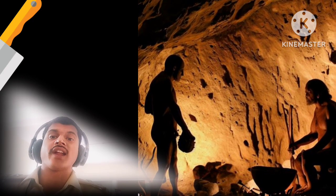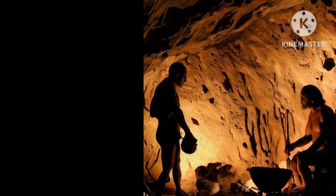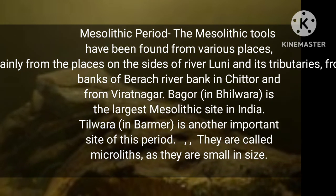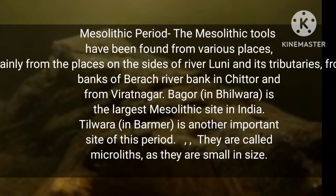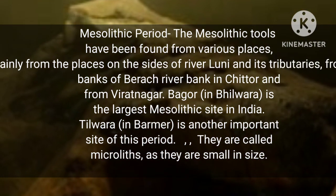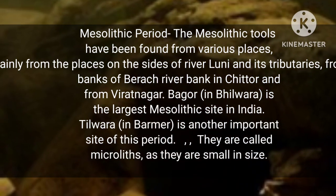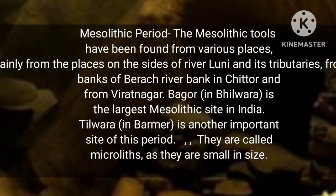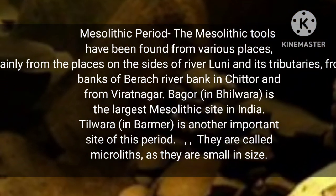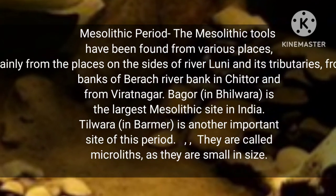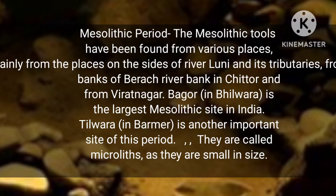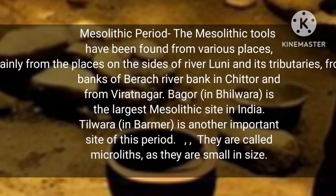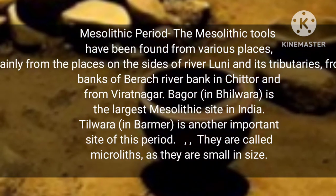In 1870, a Paleolithic hand axe was discovered from Jaipur. Mesolithic tools have been found in various places, mainly on the sides of rural areas and the east tributary banks of the Beras river in Chittorgarh and Virat Nagar. Bagor in Rajasthan is the largest Mesolithic site in India. These tools are called Microliths as they are small in size.